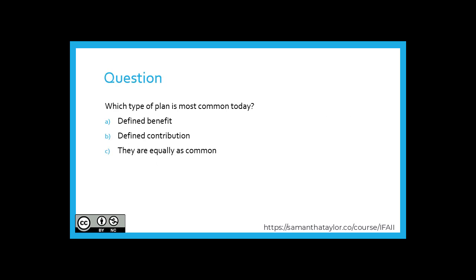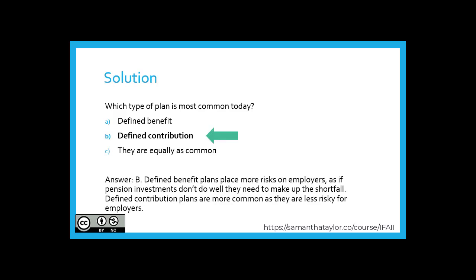A question: using your intuition about the different types of funds, which plan is most common today? Is it A, defined benefit; B, defined contribution; or C, they are equally as common? The answer is B, defined contribution. This is most common today because defined benefit plans place more risk on employers — if the pension investments don't do as well, they need to make up the shortfall. Defined contribution plans are more common as they are less risky for employers.